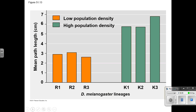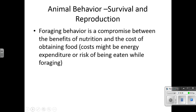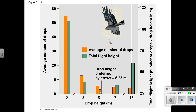A graph shows that in high-density populations, the rover gene is more prominent, while in low-density populations it is less prominent. Foraging behavior is a compromise between the benefits of nutrition and the cost of obtaining food — whether energy expenditure or the risk of being eaten while foraging. Experimental results indicate that crows dropping shells from a height of 5 meters results in breakage with the least amount of work, and the actual drop height preferred by crows corresponds almost exactly to the height that minimizes total flight effort.